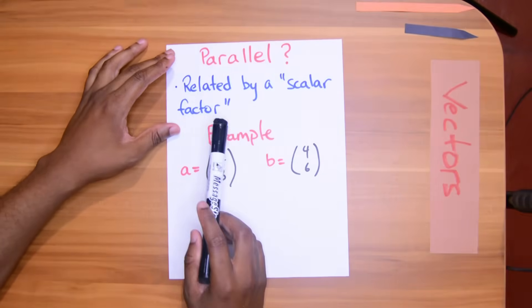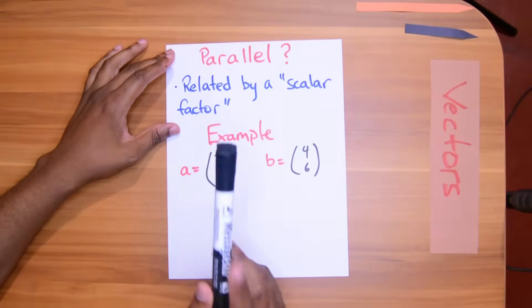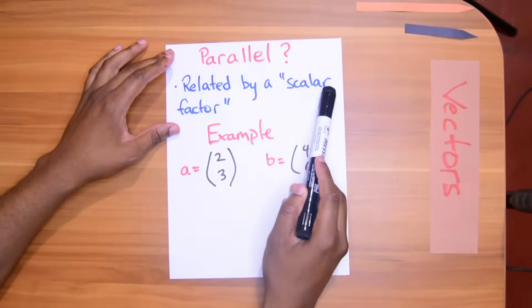A and B. And the reason that you are going to give is that they are related by a scalar factor and you will show how. Use this word, scalar factor. Sounds nice, eh? All right, so A and B show that these vectors are parallel.